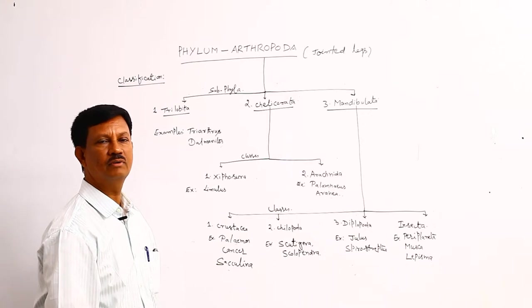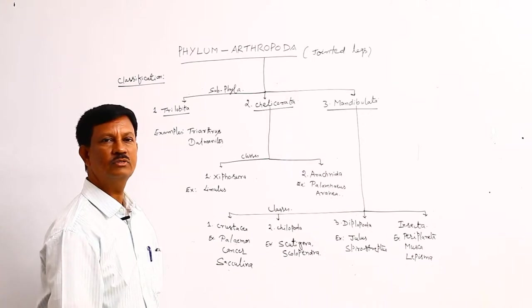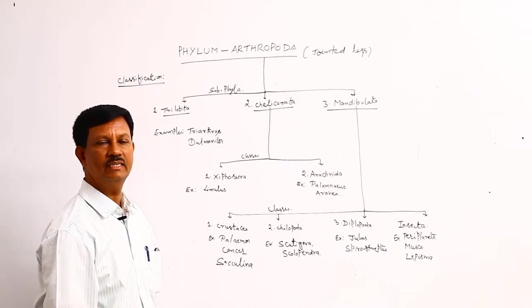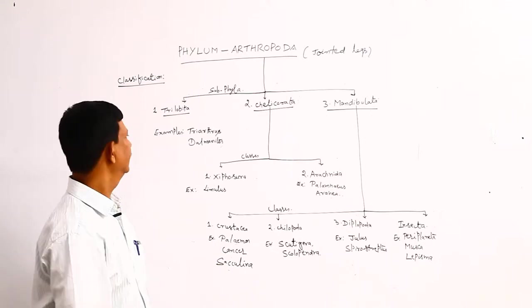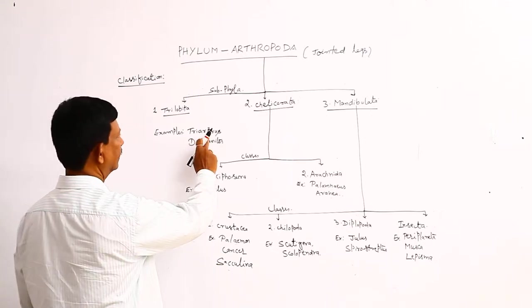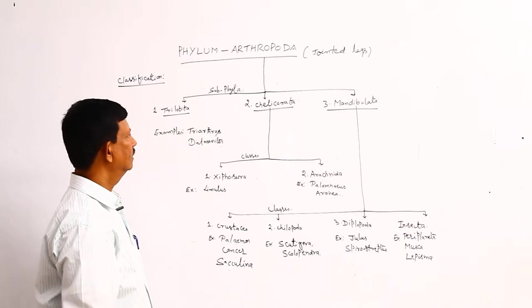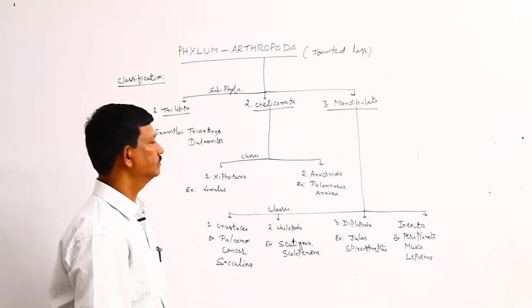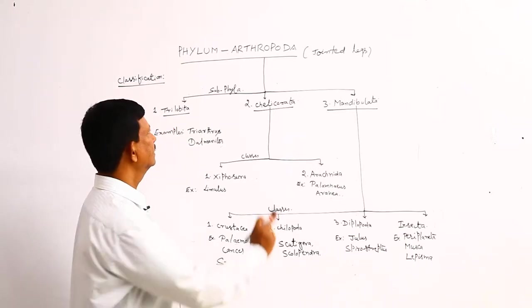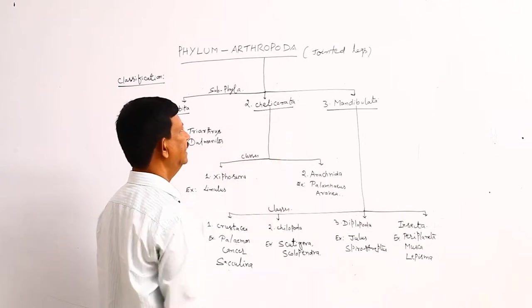They are mostly found in the Paleozoic era. Example is the Triarthrus and Dolmunita. Second sub-phyla is the Chelicerata.